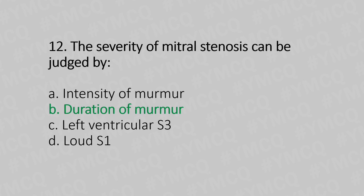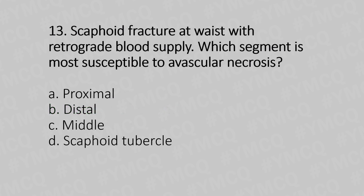Thirteenth question: Scaphoid fracture at the wrist with retrograde blood supply — which segment is most susceptible to avascular necrosis? Option A: proximal. Option B: distal. Option C: middle. Option D: scaphoid tubercle. The answer is Option A, proximal.